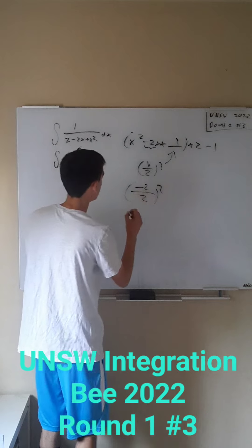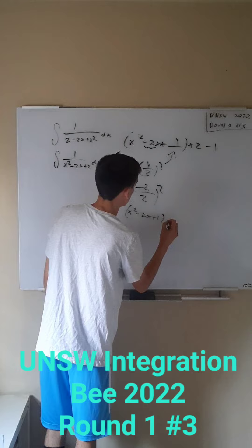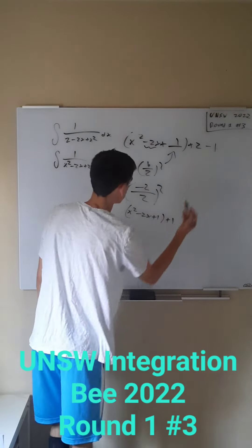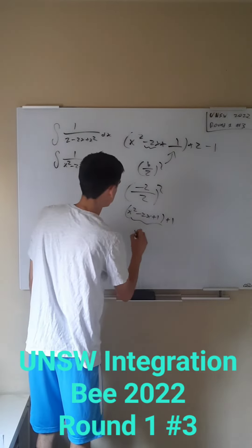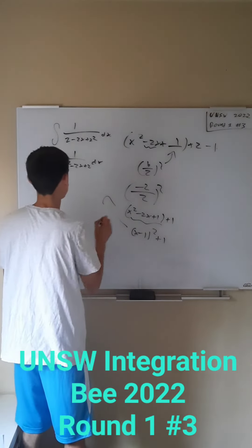So now we have x squared minus 2x plus 1 and then we have plus 1 out here because 2 minus 1 is 1. This can be factored to x minus 1 squared plus 1 and then we're just going to take this and plug it back into our integral.